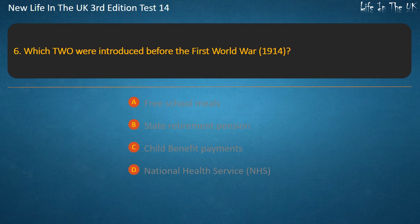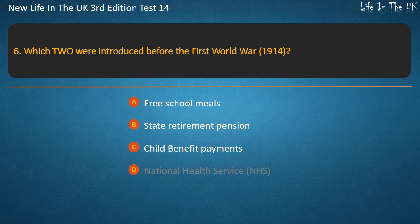Question 6. Which two were introduced before the First World War (1914)? Free school meals, state retirement pension, child benefit payments, National Health Service (NHS). Answer: Free school meals and state retirement pension.